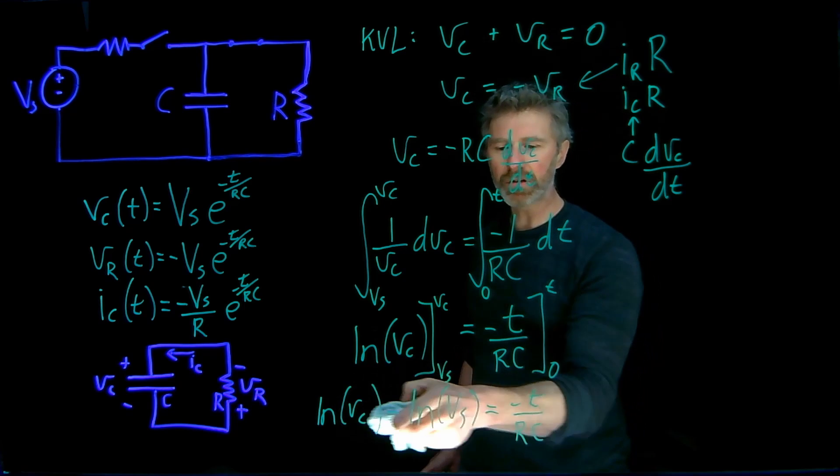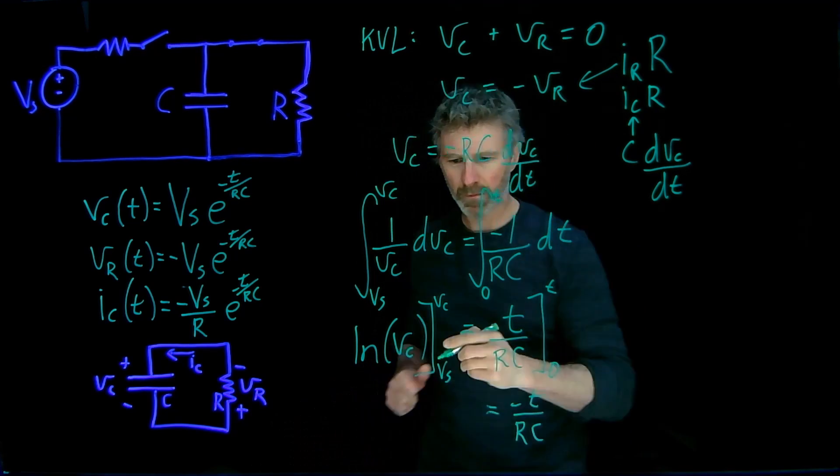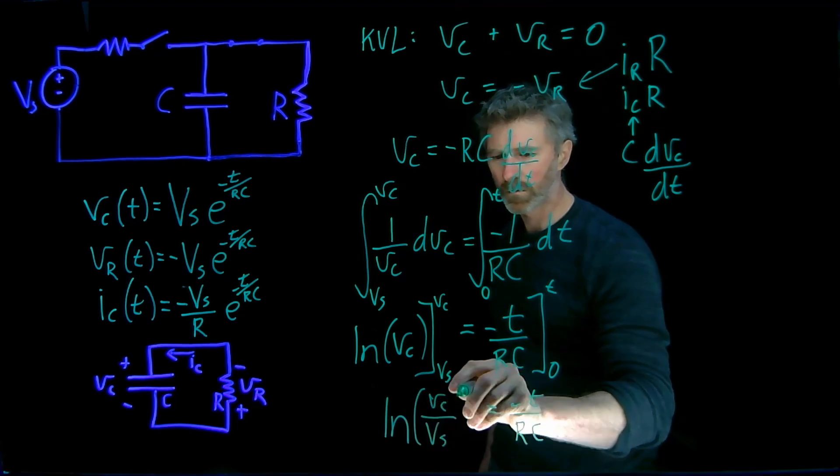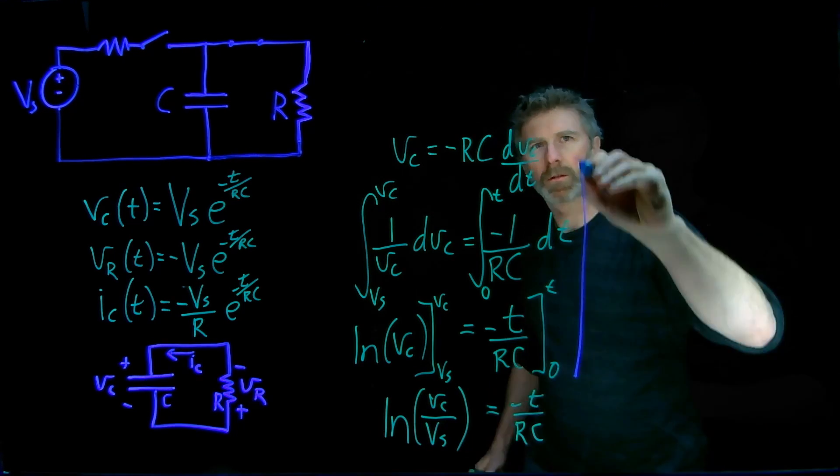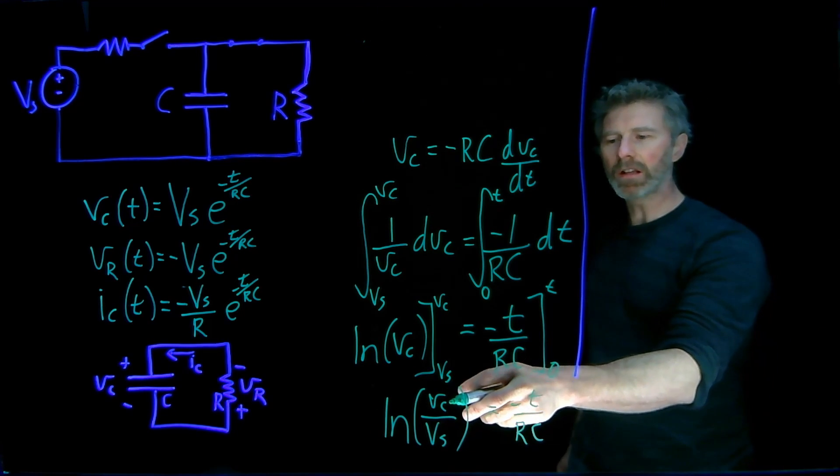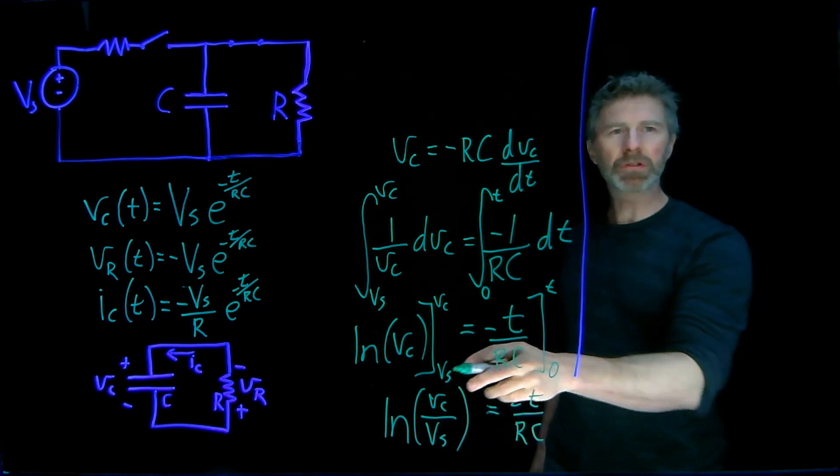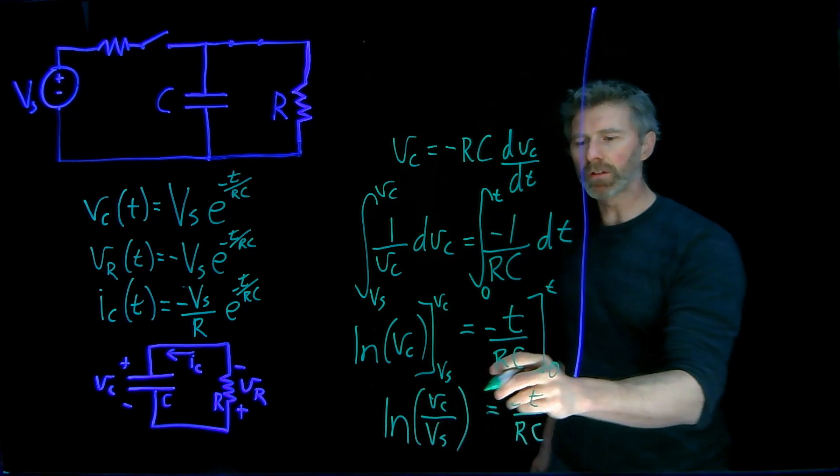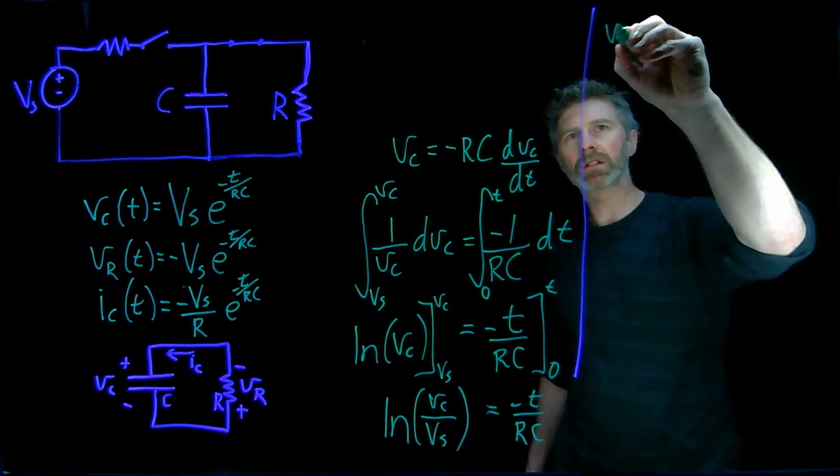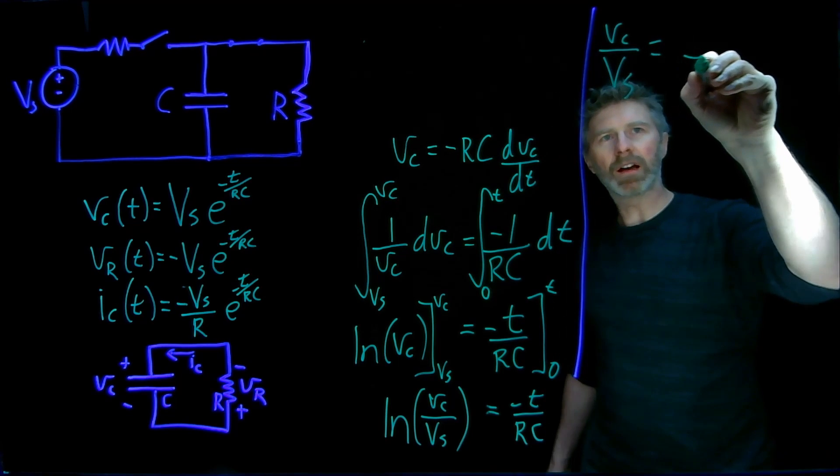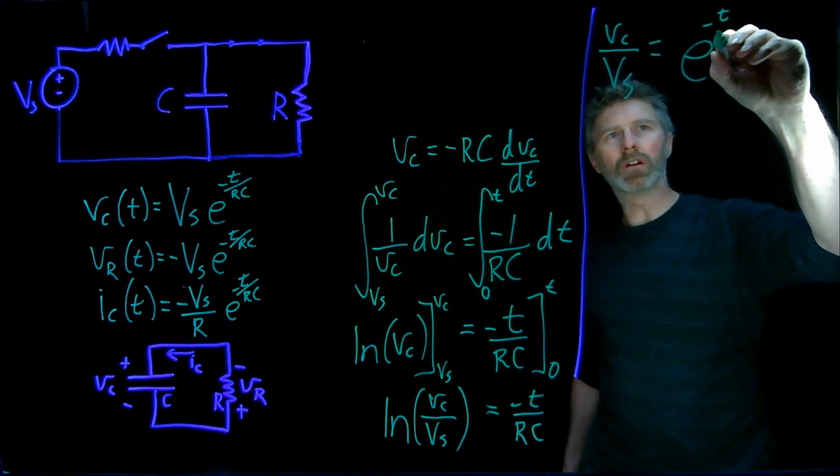I can combine these two terms together into one log expression. Now I can take the inverse log of both sides of this expression. So E to the log of VC over VS will simply be VC over VS. And then I have E to the negative T over RC.